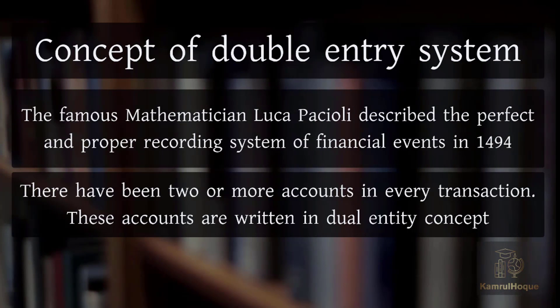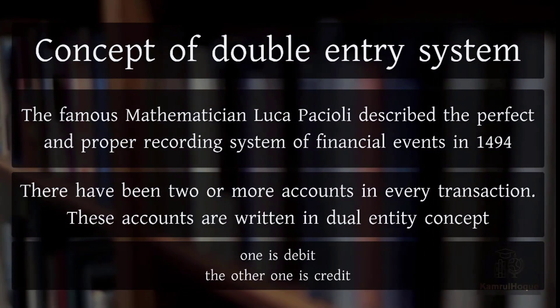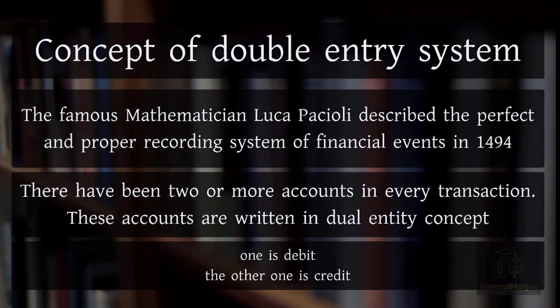There are two or more accounts in every transaction. These accounts are written in the dual entity concept. When we record transactions, we have a benefit provider and a benefit receiver. The two sides of the dual entity are Debit and Credit.